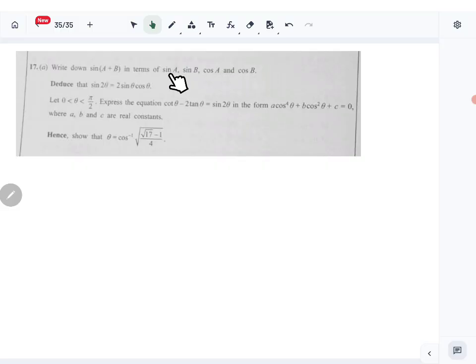So write down sin A plus B in terms of this. So sin A plus B is sin A cos B plus cos A sin B.